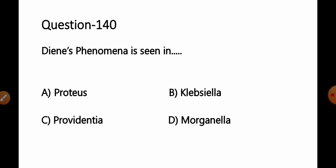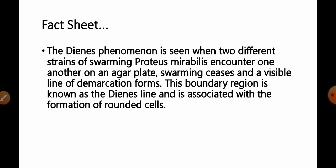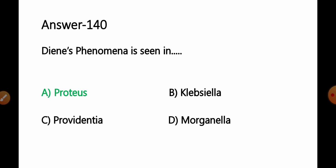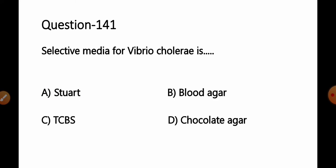Question 140: Dienes phenomenon is seen in: option A Proteus, B Klebsiella, C Providencia, D Morganella. Dienes phenomenon is seen when two different strains of swarming Proteus mirabilis encounter one another on an agar plate — swarming ceases and a visible line of demarcation forms on the agar plate. These boundary regions are known as Dienes lines and are associated with the formation of rounded cells. Option A Proteus is the correct answer.